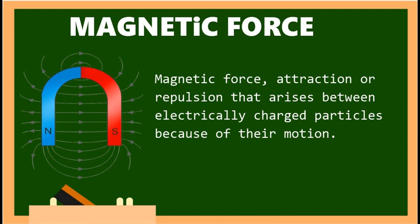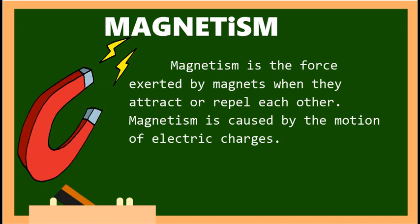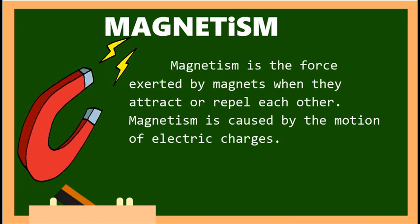Magnetic force is the attraction or repulsion that arises between electrically charged particles because of their motion. It is the force exerted by magnets when they attract or repel each other. Magnetism is caused by the motion of electric charges. Every substance is made up of tiny units called atoms — each atom has electrons, particles that carry electric charges.